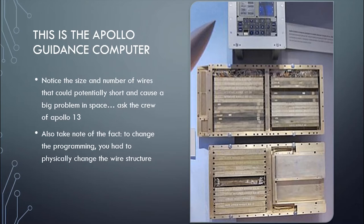Everybody talks about having more computing power in your pocket than it took to go to the moon — this is a picture of the Apollo guidance computer. Notice there's a rat's nest of wires behind these little panels. Each one of those wires was something very specific, going from one point to another, and in space a short wire and the concern for a spark in a highly oxygenated atmosphere with nowhere to go is a big problem.